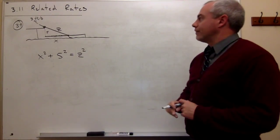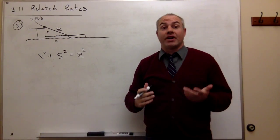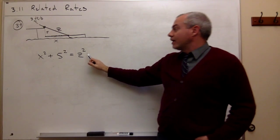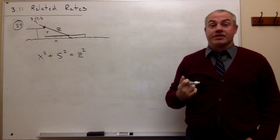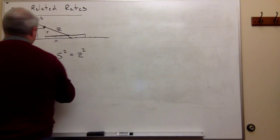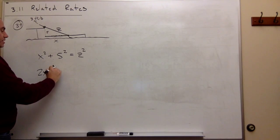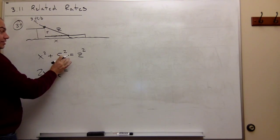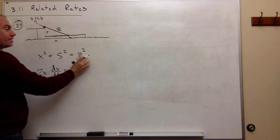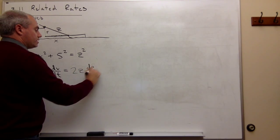We've got a formula that relates all of the different things in the problem that are changing. Now that we've got this equation, we can take the derivative with respect to t. The derivative of x² is 2x(dx/dt), the derivative of 25 is zero, and the derivative of z² is 2z(dz/dt).